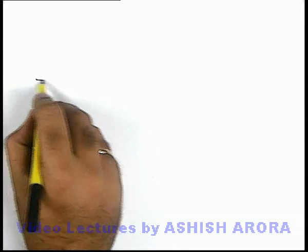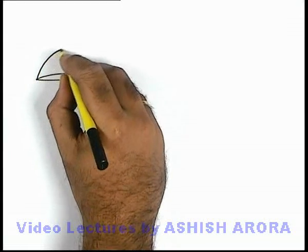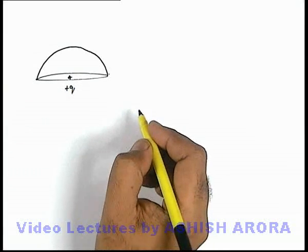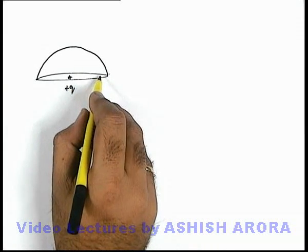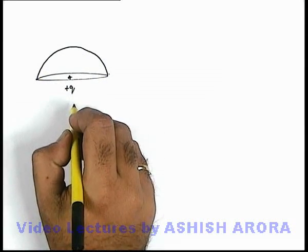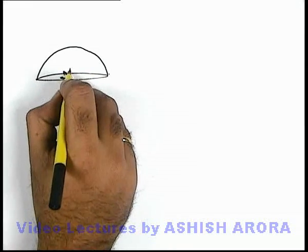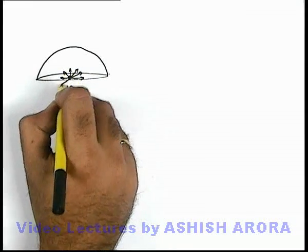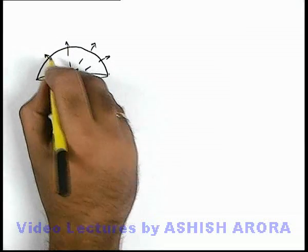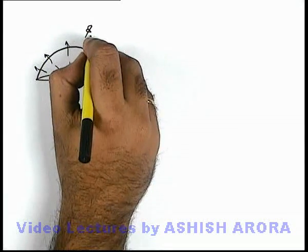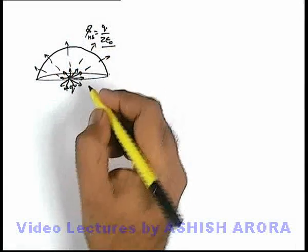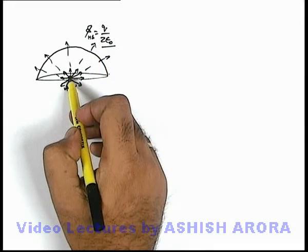Now in continuation, if we discuss a situation in which we are given with a hemispherical cup and at the center of which we have placed a charge plus q, and we wish to find out the electric flux coming out from the hemispherical region of this cup, then we can directly state: as the charge is placed at the center, 50 percent of the flux originated by the charge will come out from this hemispherical region. So directly, the flux coming out from the hemispherical region will be q by 2·epsilon-not, because the total flux originated by the charge is q by epsilon-not.